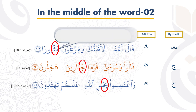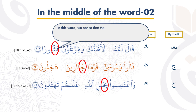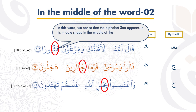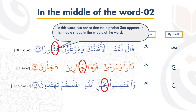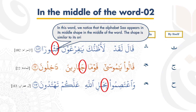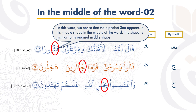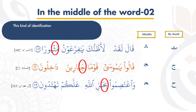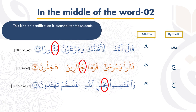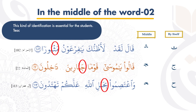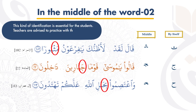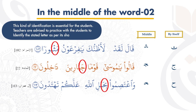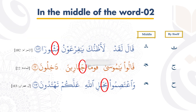In this word, we notice that the alphabet appears in its middle shape in the middle of the word. The shape is similar to its original middle shape appearance. This kind of identification is essential for the students. Teachers are advised to practice with the students to identify the stated letter as per its shape.